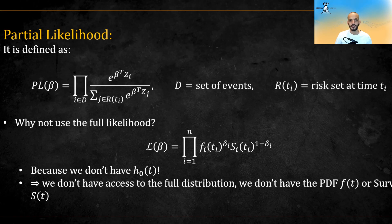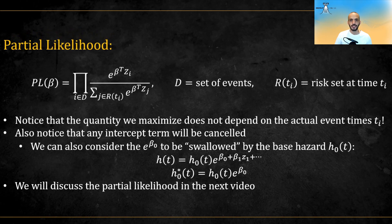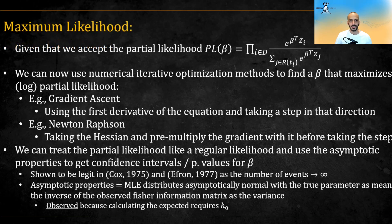Also, a few more things to notice is that the quantity we maximize doesn't depend on the actual event times, only their order. And also notice that if this is the quantity that we are going to maximize, any intercept term will be canceled. Another way to view this is to think of the intercept as being swallowed by the baseline function. We will discuss the partial likelihood more in the next video, but for now, let's take it as a given.